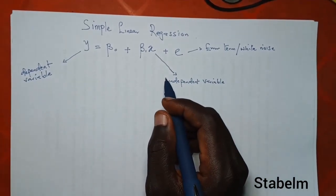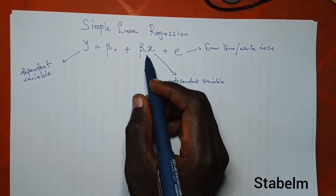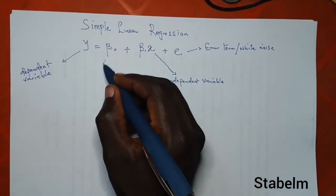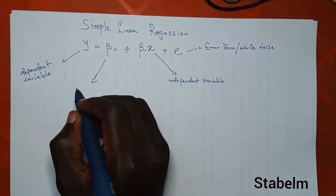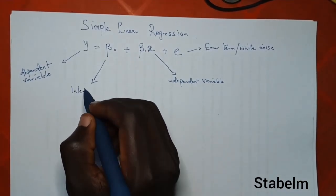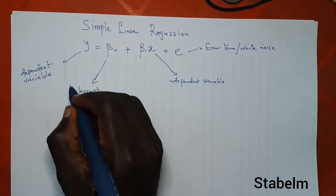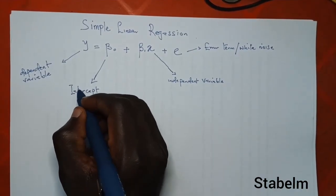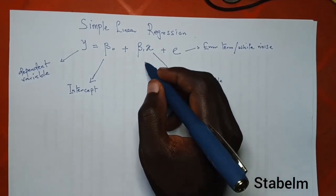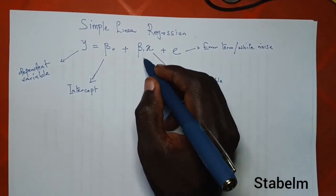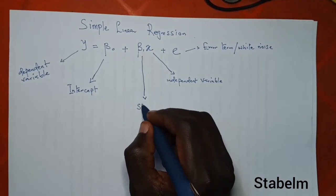Now, we have two parameters here: beta naught and beta 1. This beta naught you can call the intercept, and we have beta 1 as the slope.